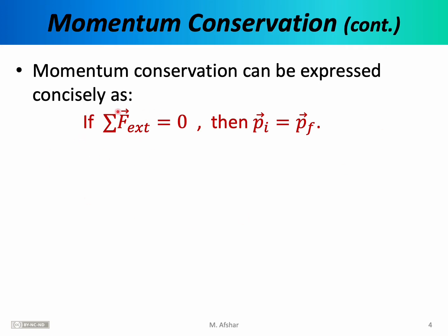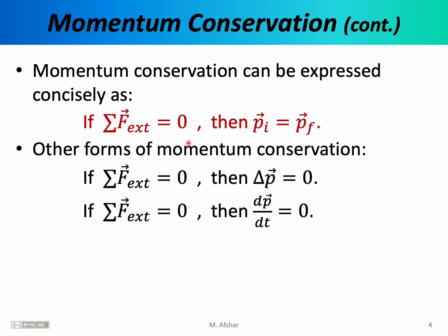Concisely, the principle states that if the sum of external forces is equal to zero, then p initial is equal to p final. We have some system evolving and moving in time. We consider two moments in time — initial and final. We calculate the initial momentum of the system, and then later we calculate the final momentum. When these two are equal to each other, we say momentum is conserved. This same equation is sometimes written as: if the sum of external forces equals zero, then delta p equals zero. You understand this means the same thing, since delta p is defined as p final minus p initial.